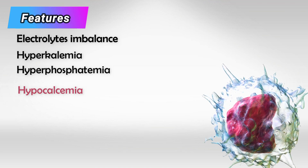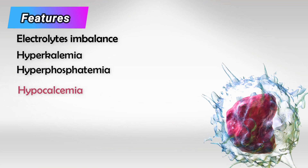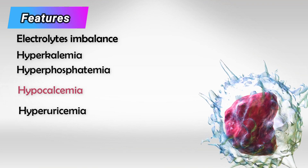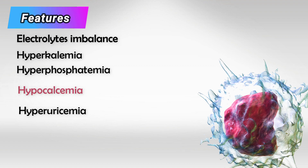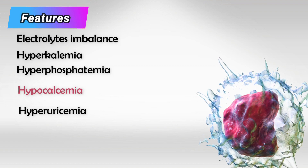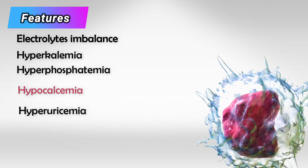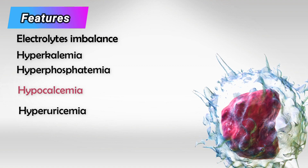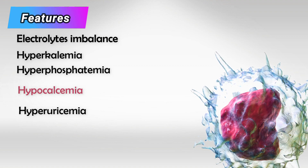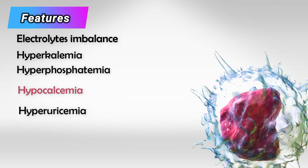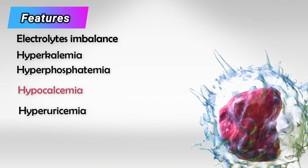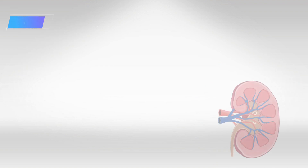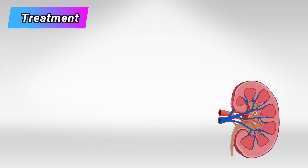The cancer cells also contain a lot of nucleic acids and proteins. Once those are released into the bloodstream, they will be broken down into uric acid, so the patient will also have hyperuricemia. This can quickly lead to acute renal failure. Tumor lysis syndrome is therefore a very serious condition and must be considered before starting chemotherapy.